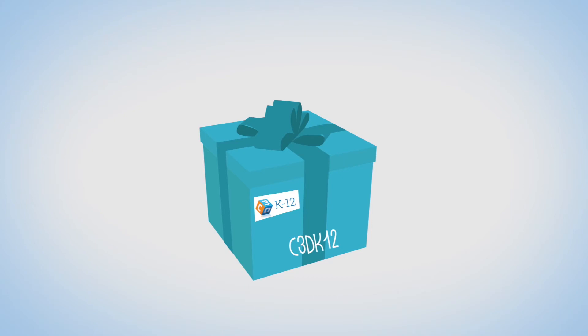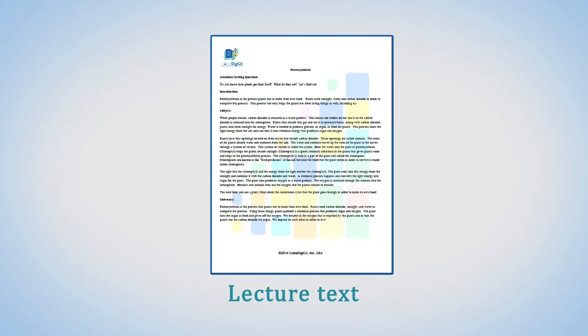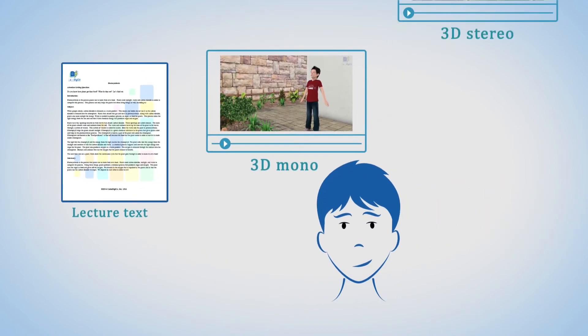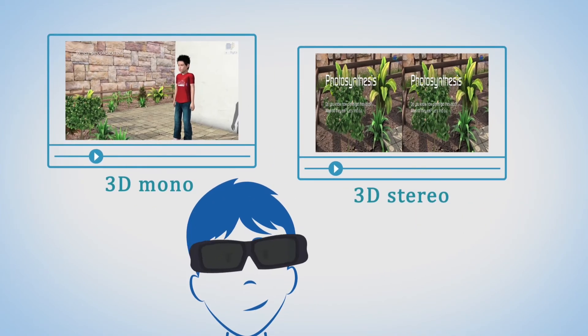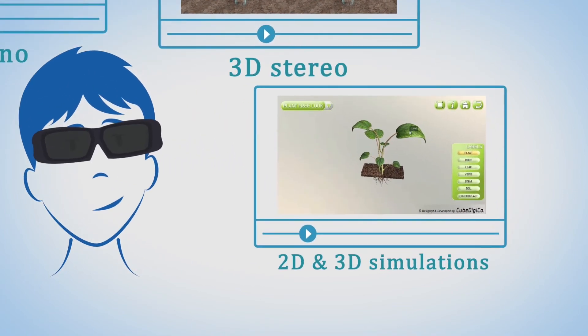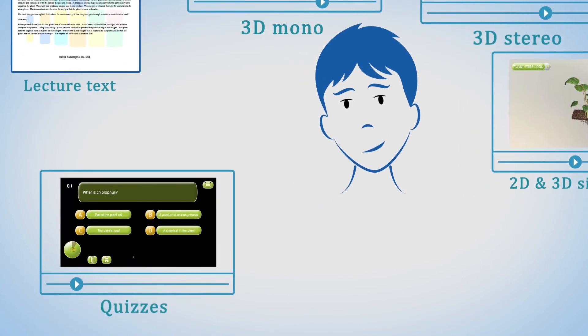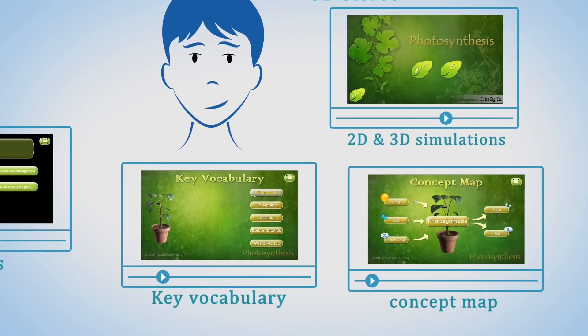Cube 3DK-12 product features: Every topic consists of lecture text, visual representation in 3D mono and 3D stereo videos, interactive representations in 3D simulations, assessments of learning, quizzes, key vocabulary, and concept maps.